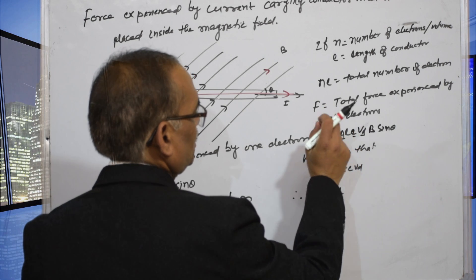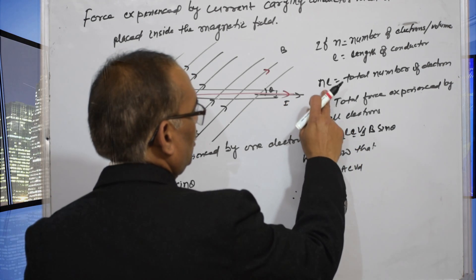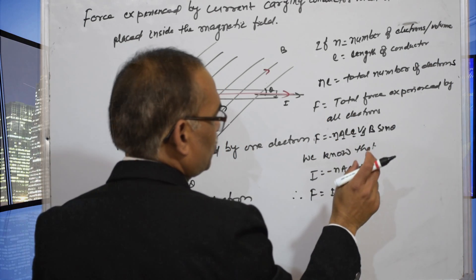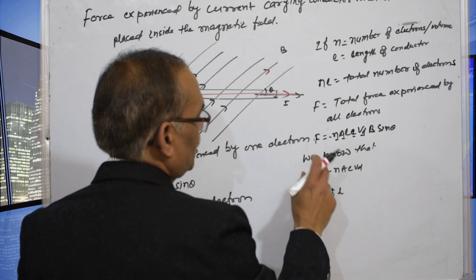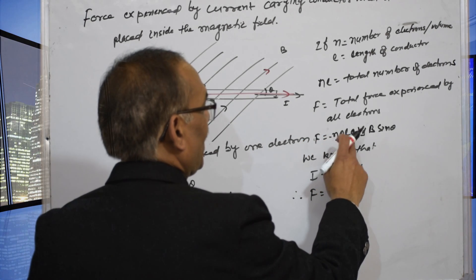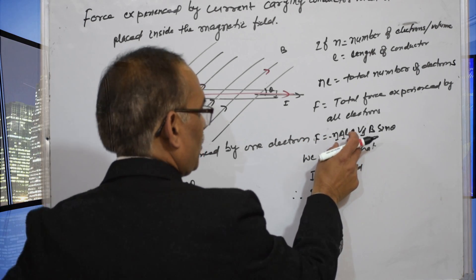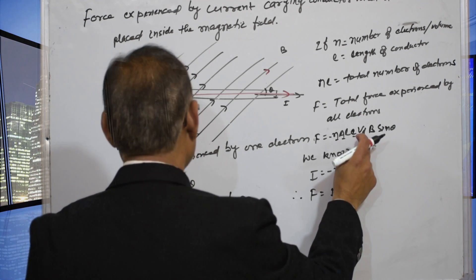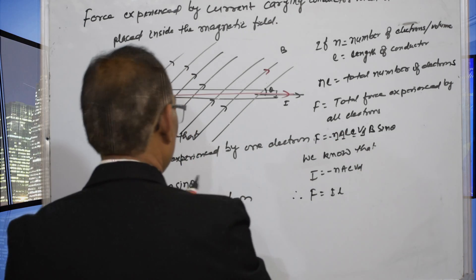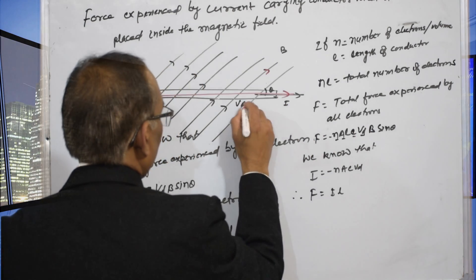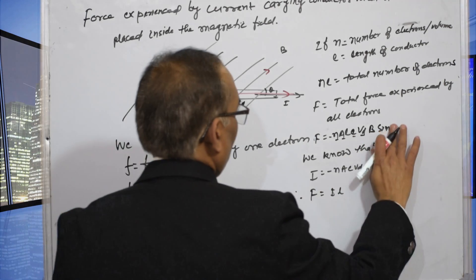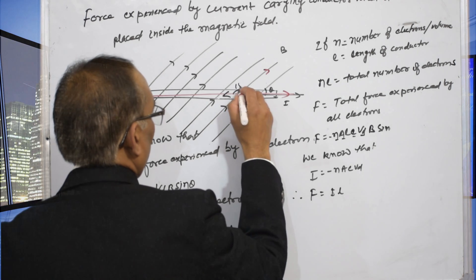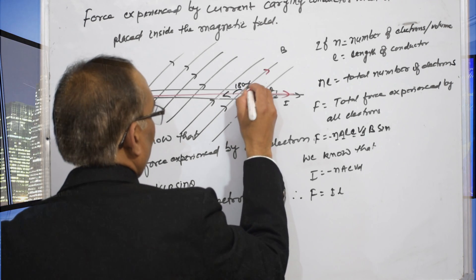The total number of electrons inside the conductor is equal to N A L. The force experienced by all the electrons is F equals N A L E V_d B sin theta, where N A L is the total number of electrons and E is the charge on each electron. The drift velocity is going along the direction, so the angle between the drift velocity and magnetic field is equal to 180 degrees minus theta.